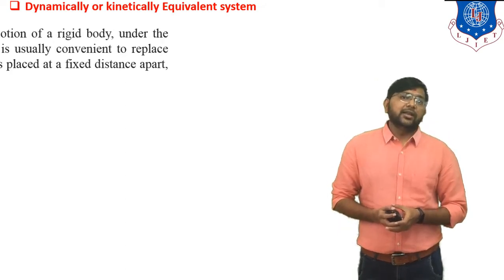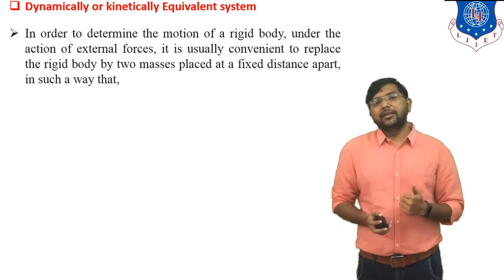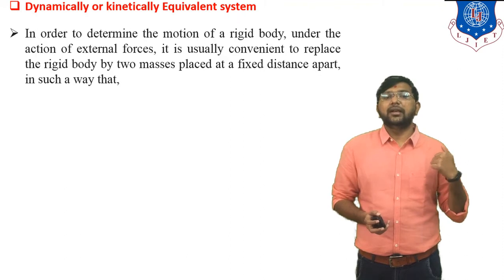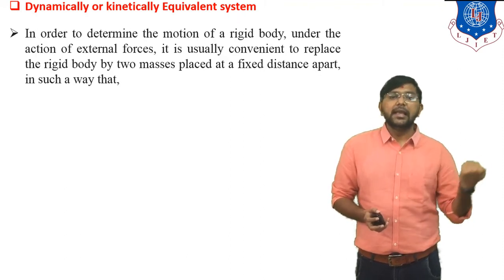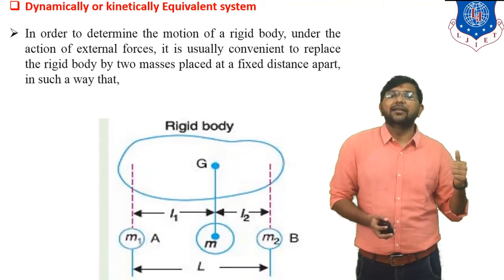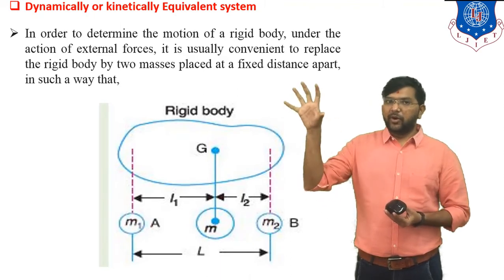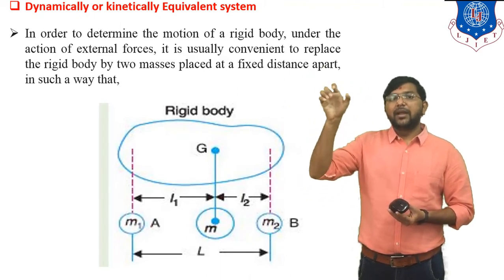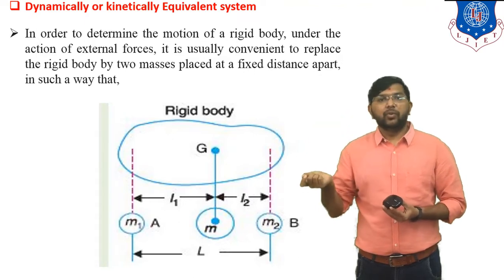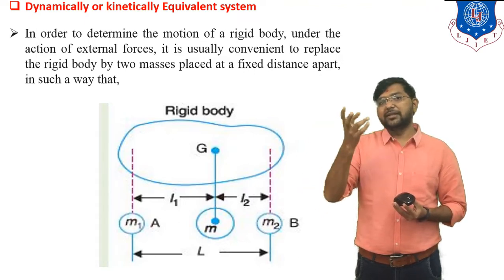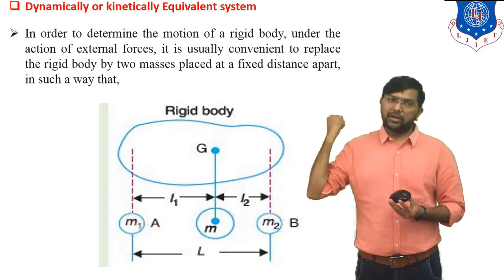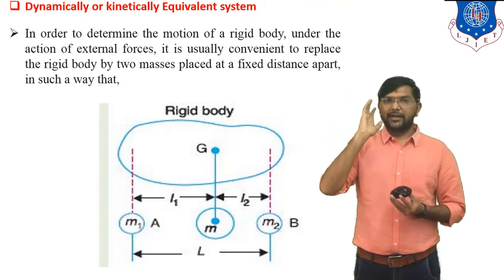Dynamically or kinetically equivalent system: in order to determine the motion of a rigid body under the action of external forces, it is usually convenient to replace the rigid body by two masses placed at a fixed distance apart, as shown in this figure. There is one rigid body of mass capital M, and we consider it as a two-mass system: mass M1 and M2. Capital G indicates the center of gravity.